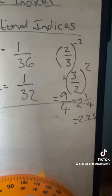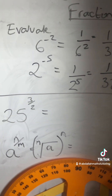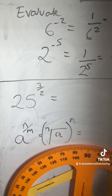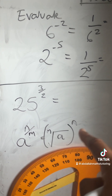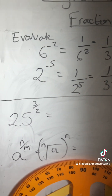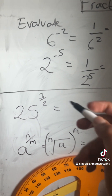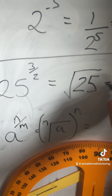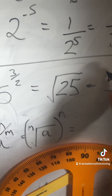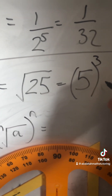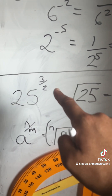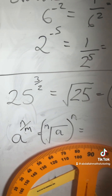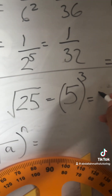Either answer would suffice. Now looking at some fractional indices: 25 to the power of 3 halves. This is a bit trickier, and this section is explicitly higher tier only. So here, I do the root of the denominator — so here it's a square root of 25, which is 5 — and then I raise my answer to the power of the numerator. So 5 cubed is 125.